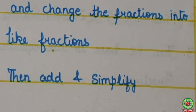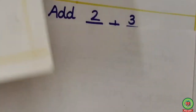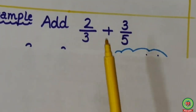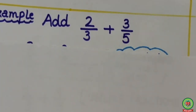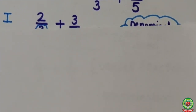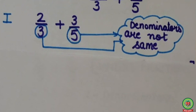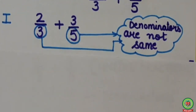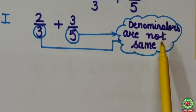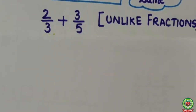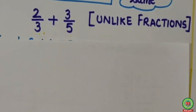Let's understand with examples. Here, we have to add 2 upon 3 and 3 upon 5. Step 1: we have to check the denominators. Here denominators are 3 and 5. As you can see, denominators are not same. Therefore, these are unlike fractions.